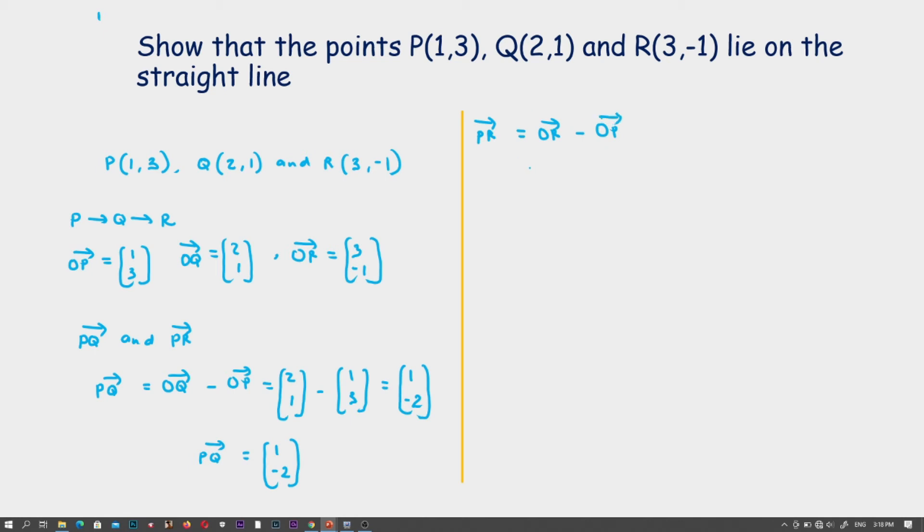The position vector OR is (3,-1). We're subtracting OP from it, and vector OP is (1,3). So we have 3 minus 1, and -1 minus 3. This gives us 2 and -4. So vector PR is (2,-4).